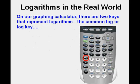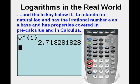Now in our graphing calculator, there are two keys that represent logarithms. The common log or log key, highlighted here. And below it, the ln key. The ln stands for natural log and has the irrational number e as a base and has properties that will be covered in pre-calculus and calculus courses.